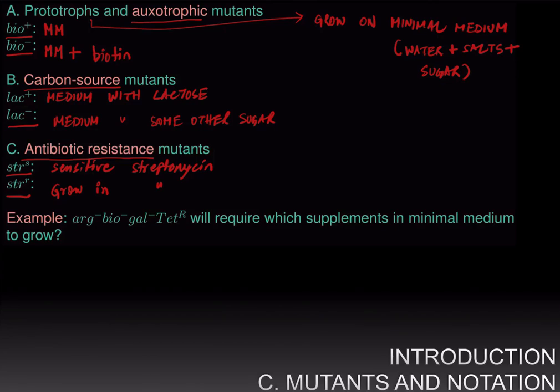Let's do an example. We have this strain which is arginine minus, biotin minus, gal minus, and tet-R, which is resistance for tetracycline, which is a type of antibiotic. The question is, what supplements will this strain require for growth in minimal medium? We have minimal medium, and we have to decide what should we supplement this with. This strain is arginine minus, that means it lacks the ability to synthesize arginine, and evidently, we will have to supplement this medium with arginine.